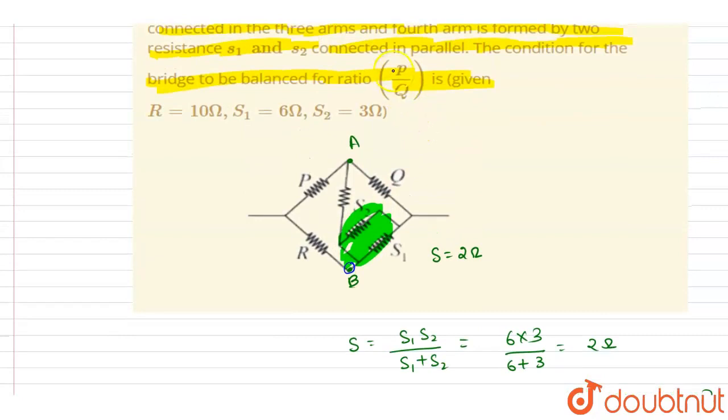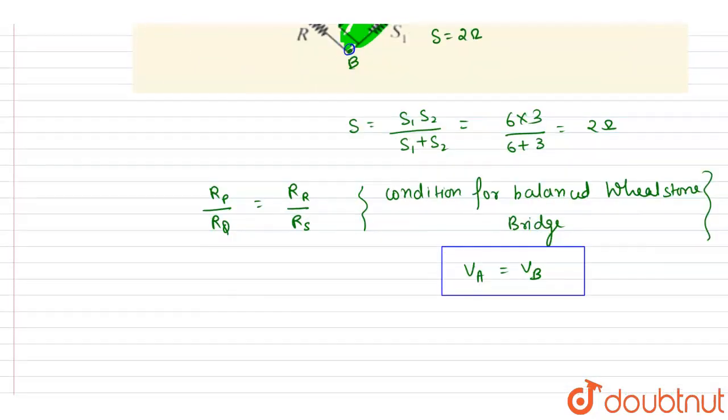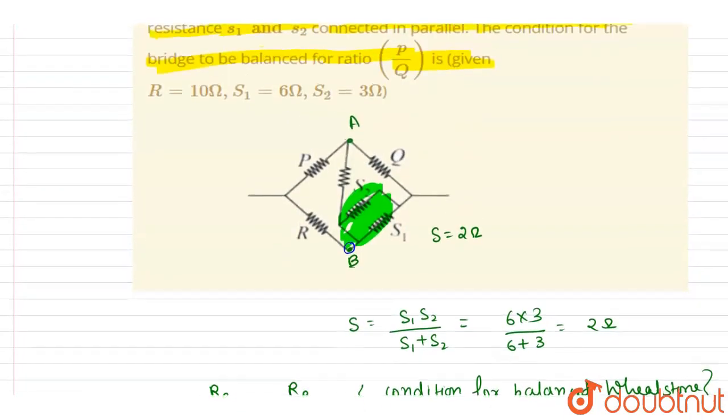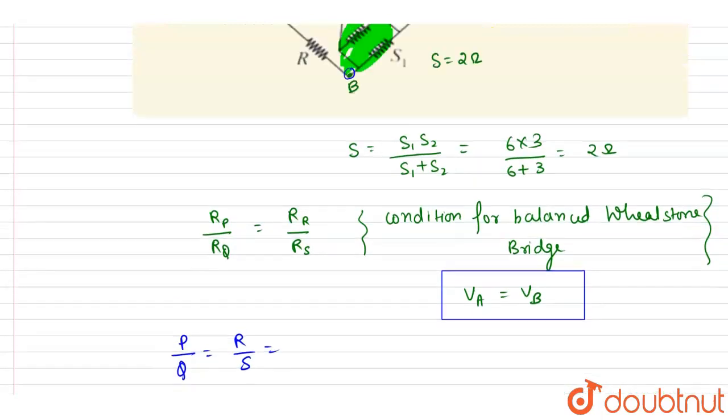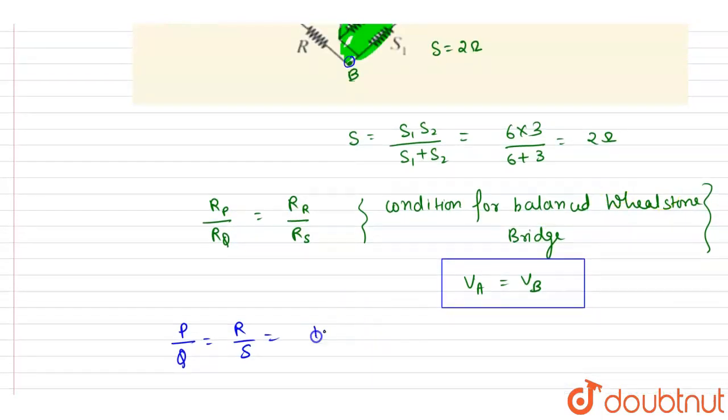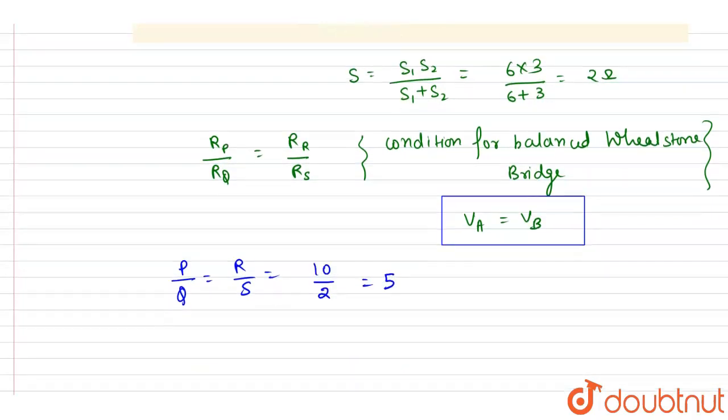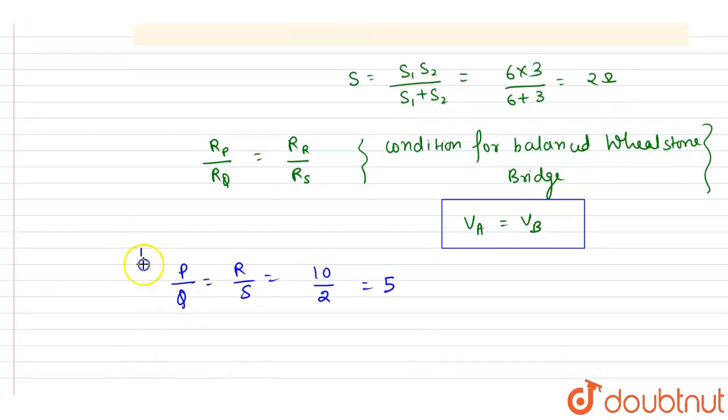We want P by Q, so I will write down the resistance of P is P, resistance Q is Q, equals to R. R is given here, it is 10, and S is, we calculated it is 2. So the ratio should be equals to 5.